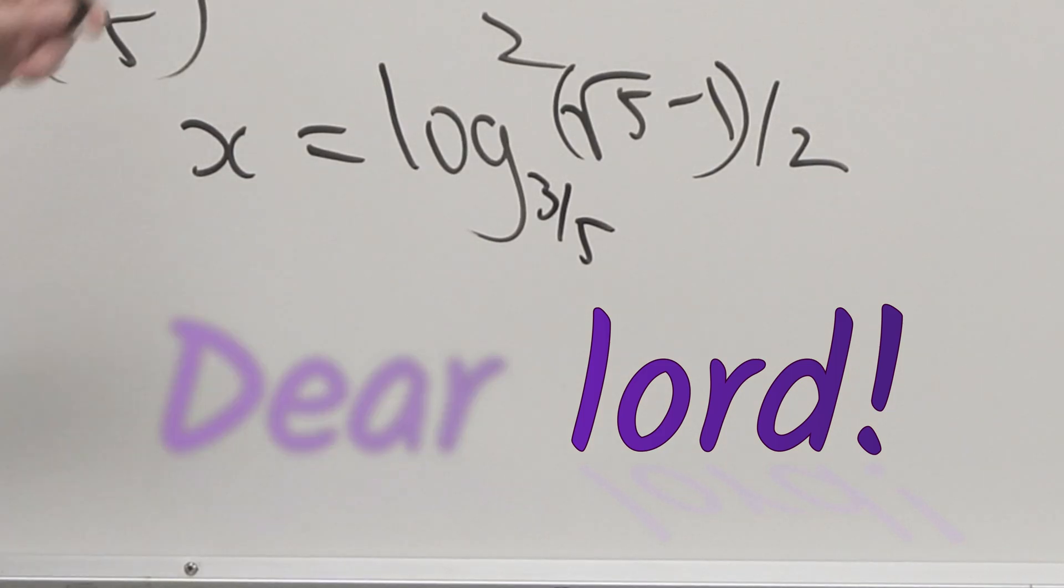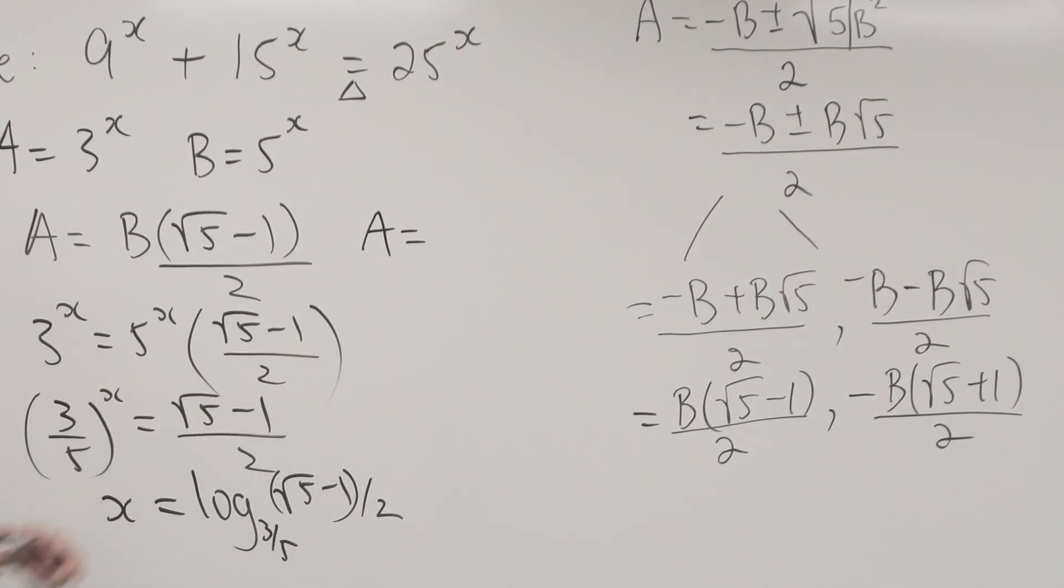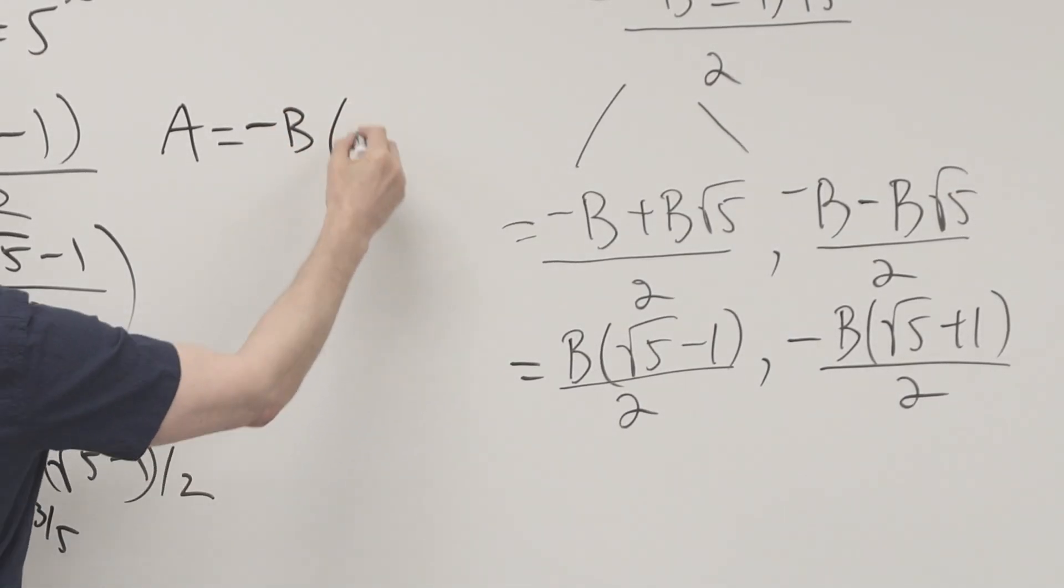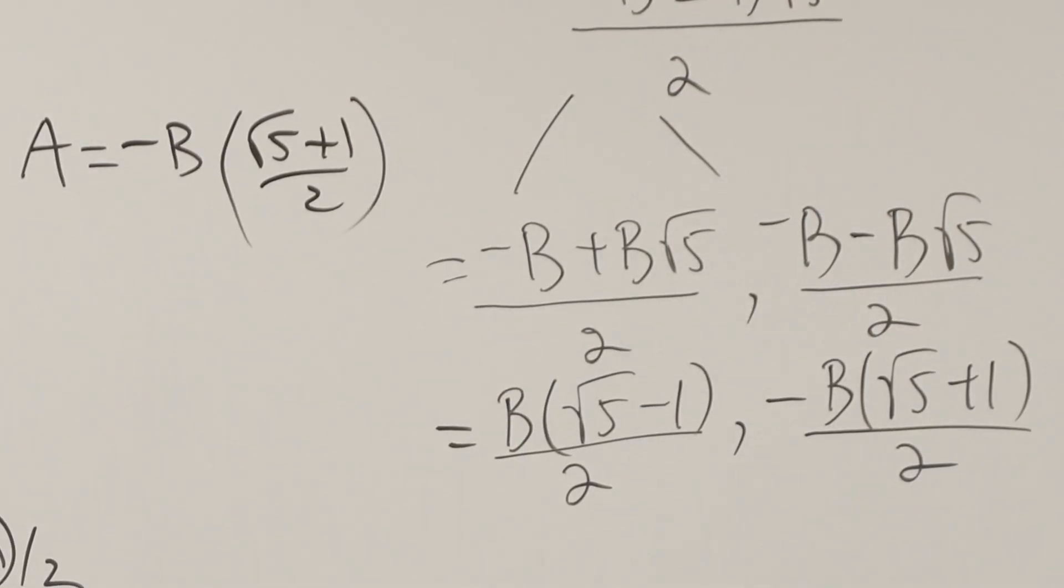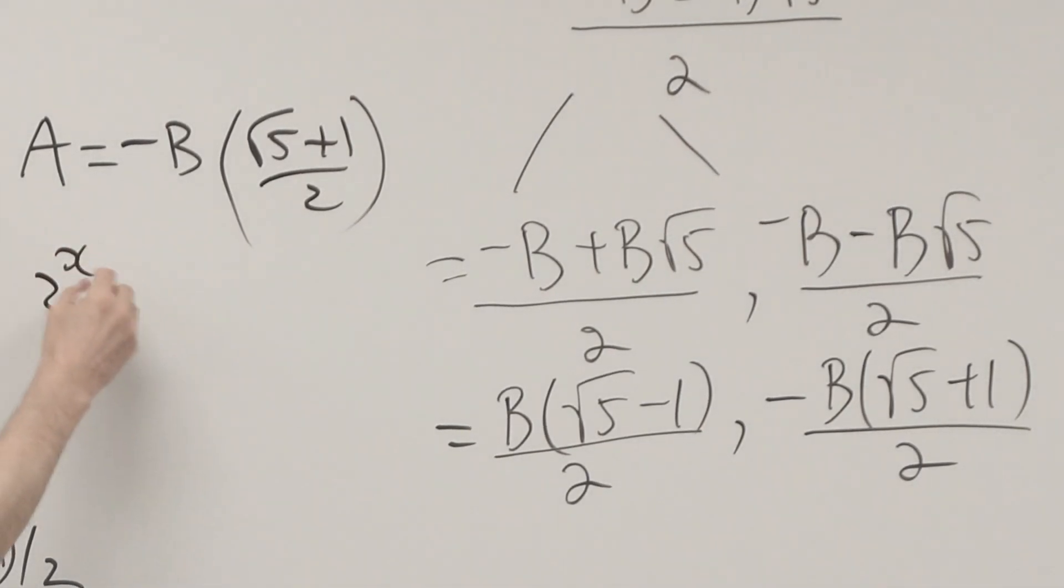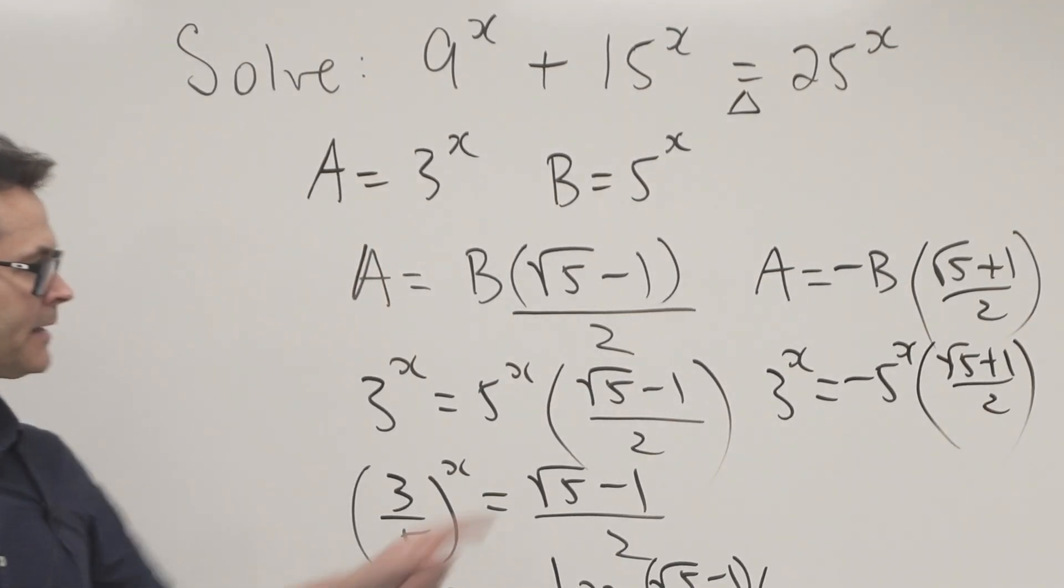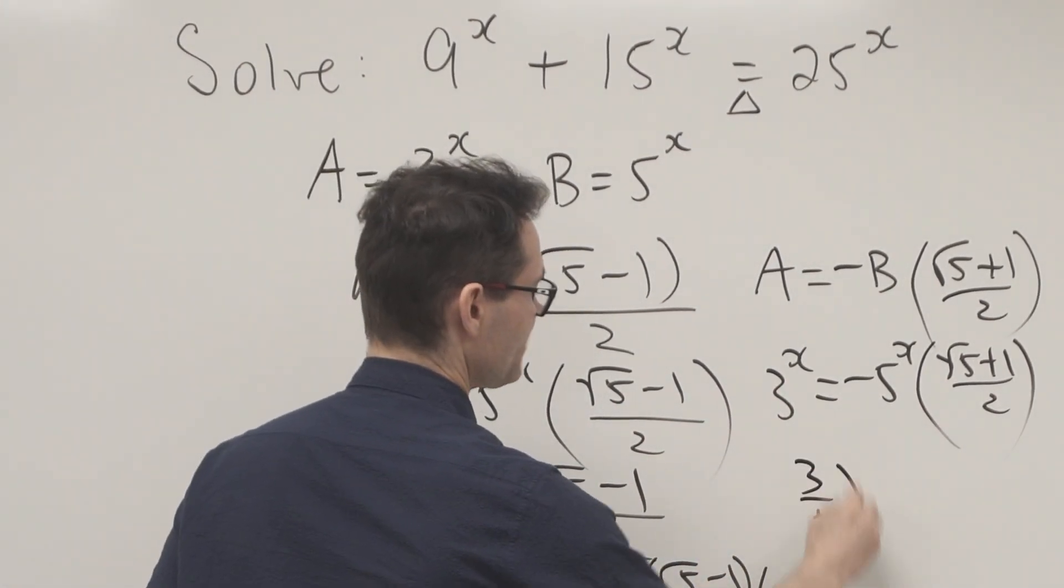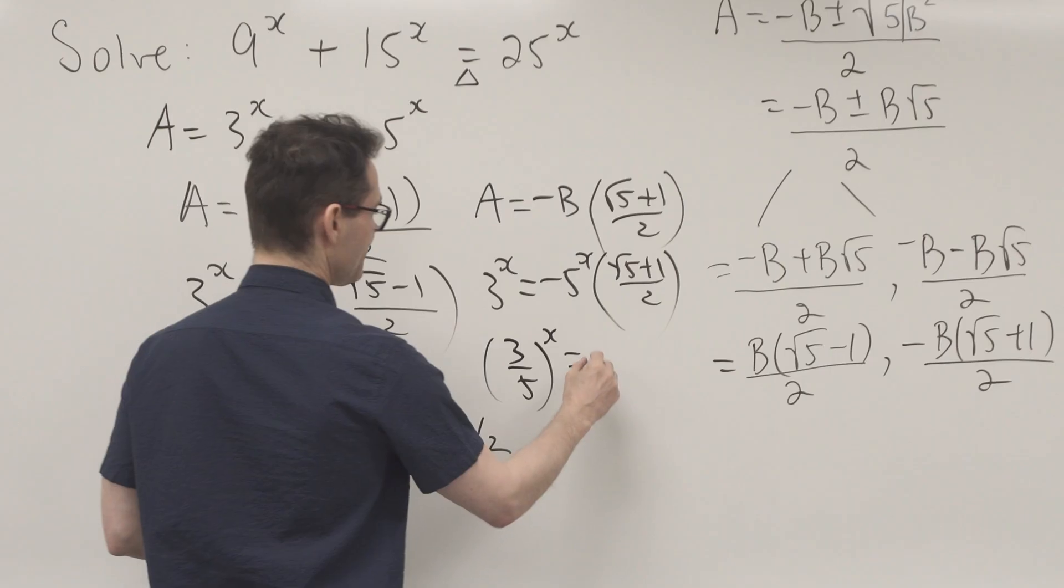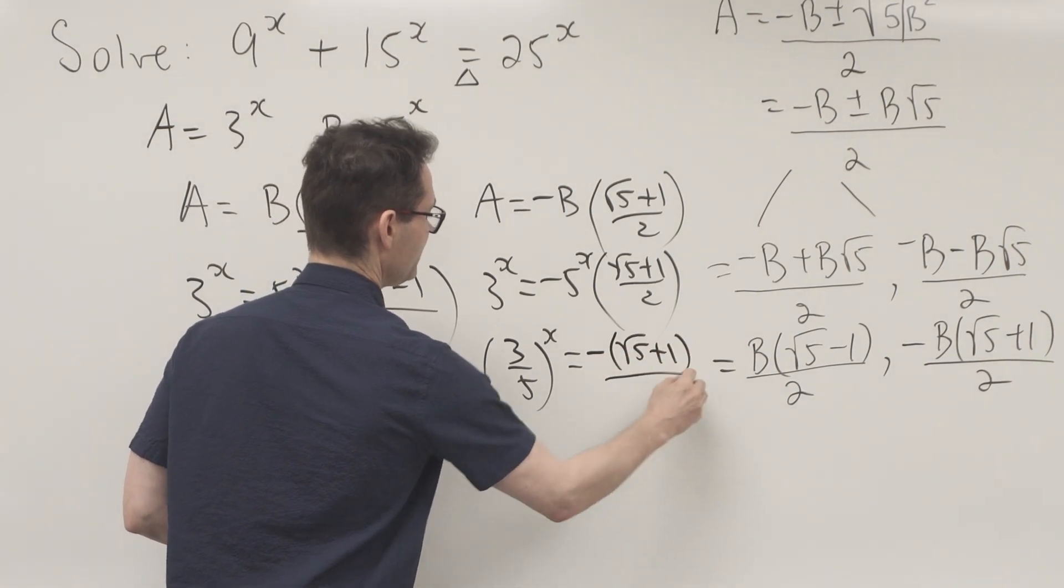For the second case: A = -B(√5 + 1) / 2. Substituting back: 3^x = -5^x(√5 + 1) / 2. Dividing by 5^x gives (3/5)^x = -(√5 + 1) / 2, which is negative.